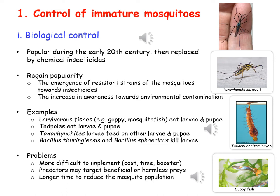Biological control of mosquitoes can be environmentally friendly, but it is more difficult to implement due to the underlying cost and time, and usually you are required to boost the number of biological agents. The predators usually do not target only mosquitoes — the strategy is not specific — and the strategy usually takes longer time to reduce the mosquito population.